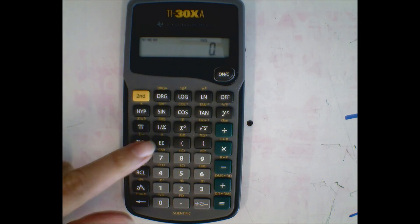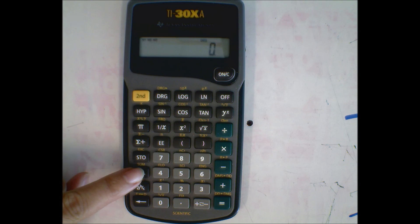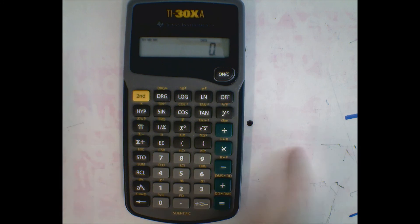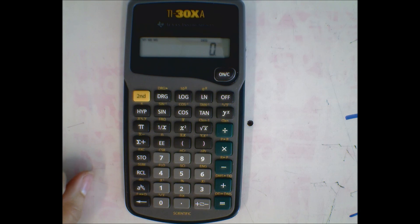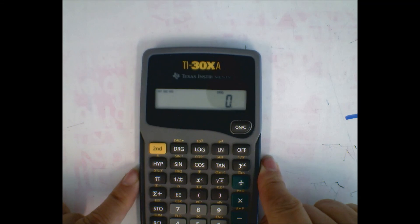So EE for scientific notation. Store if you know it's a constant that you're going to use a lot, you can store the number. Recall is how you get it back. The only downside to this calculator is that you can only store three constants. That is the only downside, and that's the TI-30XA.